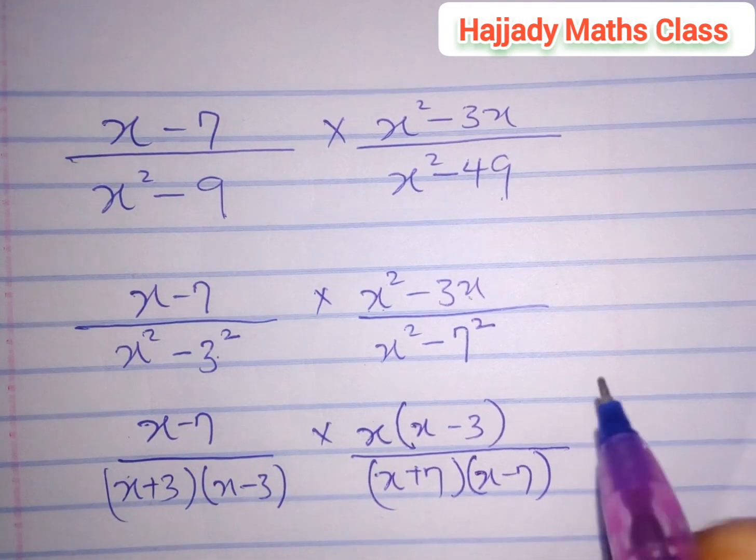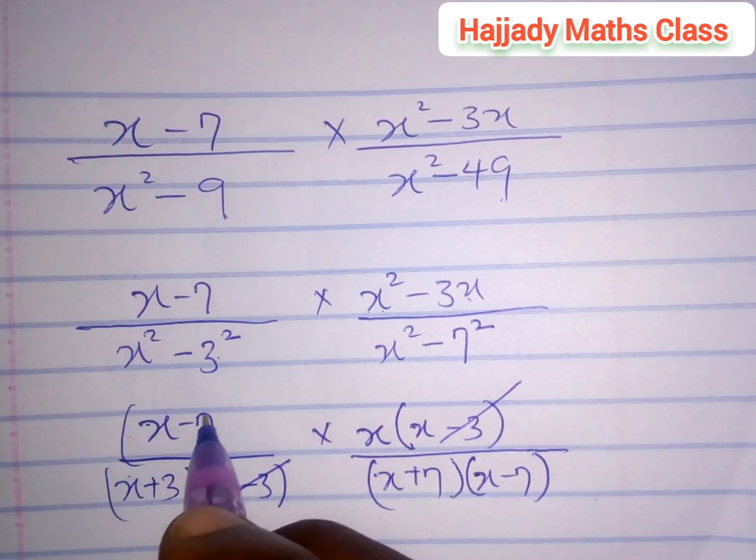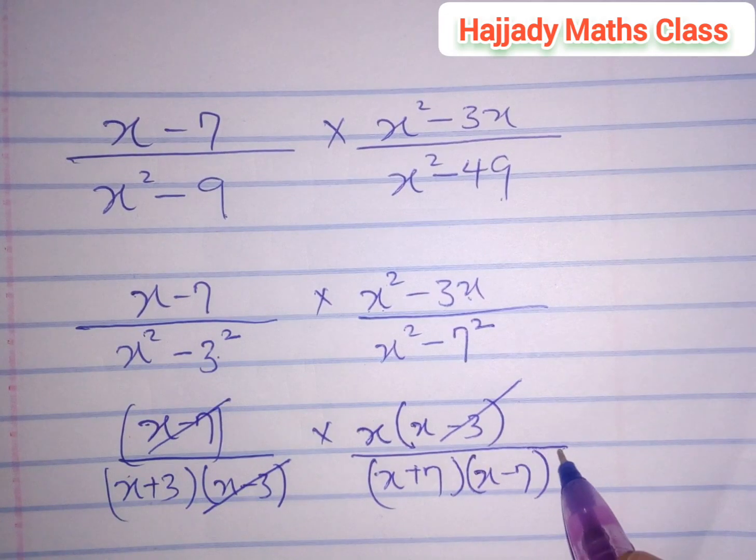Now, to cancel out, x minus 3 can cancel out this, and x minus 7 will cancel out this.